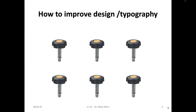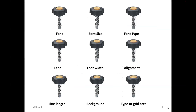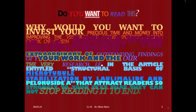There are a lot of different measures you can use to improve design: font size, font type, the lead (the space between the lines), kerning (the distance between the characters), alignment (left, right, centered), and the length of the line. I will also show you the background and the type area or grid.